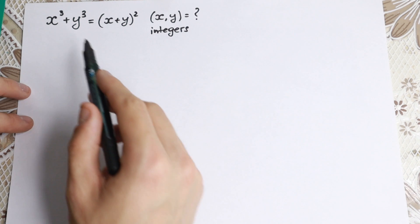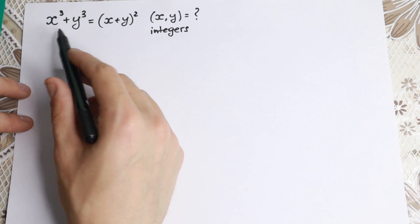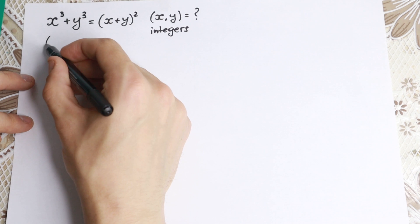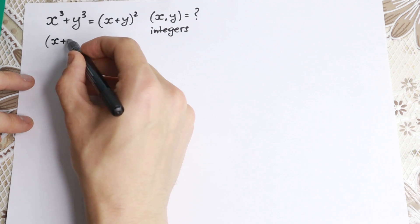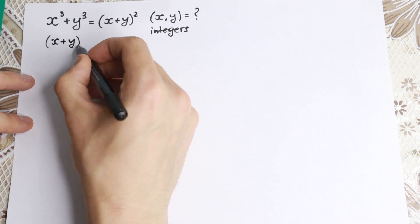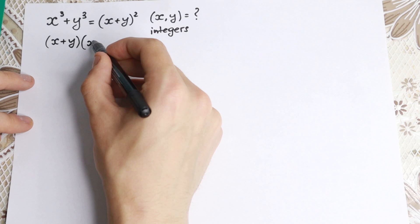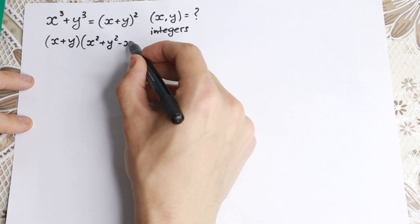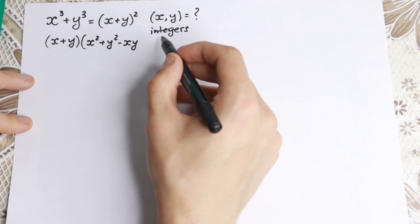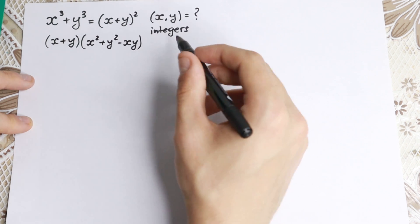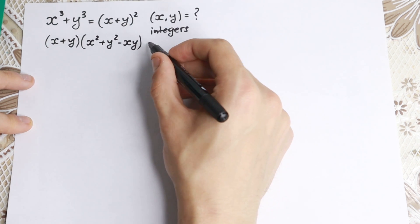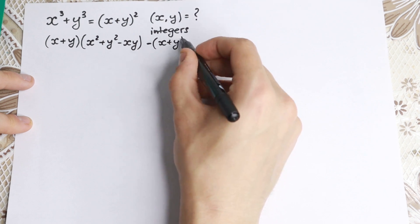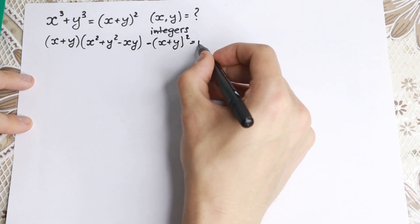What are we going to do with this? Of course we need to use a formula — we have the sum of cubes, so let's write our formula. Firstly we have (x+y), and in the second parentheses x² plus y² minus xy. And let's bring this element on the right hand side to the left hand side. We have minus (x plus y) squared equal to 0.